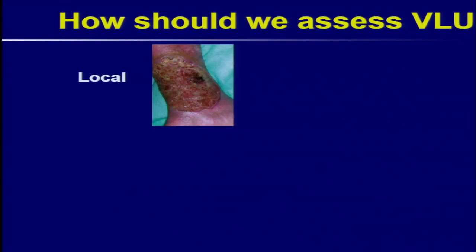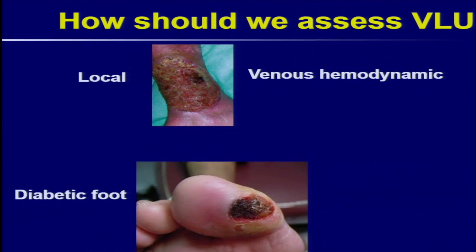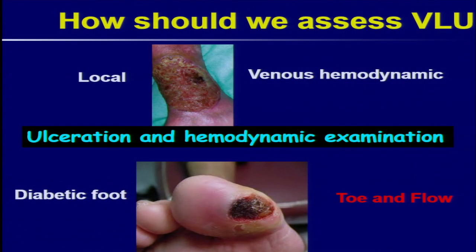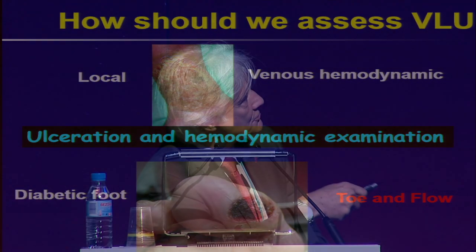How can we approach this? Obviously, if we have that ulceration, we can look at it only at the local point and assess the venous ulceration. But obviously there is still something behind that — the venous hemodynamics. If you look into the field of the diabetic foot, people who are very much involved in diabetic foot have certain guidelines on how to treat these patients, known as 'toe and flow.' So far, we don't have a similar strategy for venous ulceration. Today, I would like to propose something that should sound like this: ulceration and hemodynamic examination. Ulceration means local treatment, which I am not going to talk about today. I will focus only on hemodynamic examination.